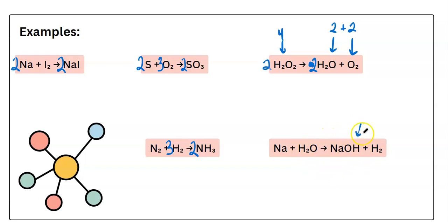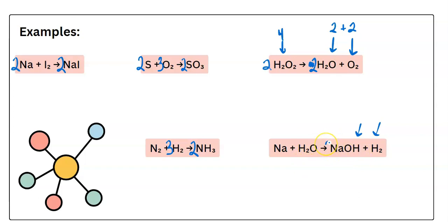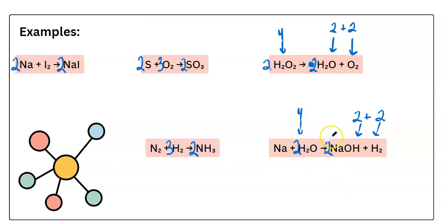Over here, you can see hydrogen appearing twice in our products, so let's leave that till the end. We'll start with sodium: one sodium and one sodium — great. Oxygen: one oxygen and one oxygen — great. So we're just left with the hydrogens. We have two here, so we can only end up with an even number of hydrogens in our reactants. So let's multiply this one by two to force the same. Now we have a total of two and two hydrogens, which is four. So we can put a two over here to also have four hydrogens. Now let's double check everything else: two oxygens and two oxygens — great. But now we have one sodium and two sodiums over here, so we can fix that with a coefficient of two. Now it's balanced.